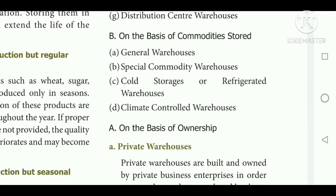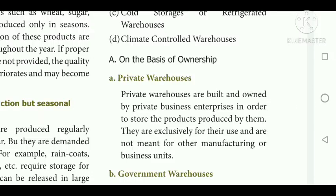Private warehouses: these are built and owned by private persons in order to store products produced by them only — for their own purposes. They are exclusively for their own use and not meant for other manufacturing or business units. Government warehouses: these are created and operated by the government to implement government programs, running services that are mostly available to the government only.